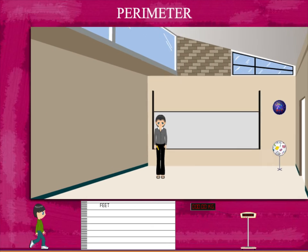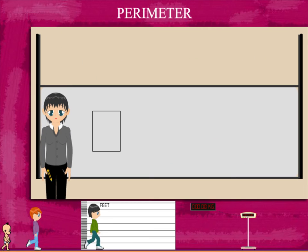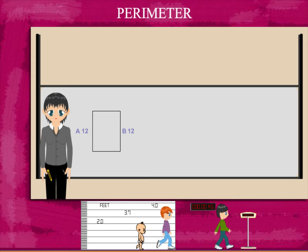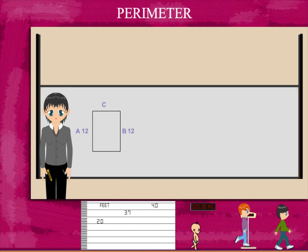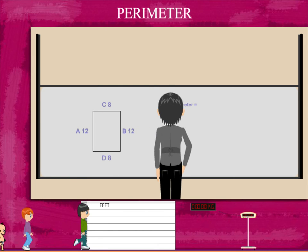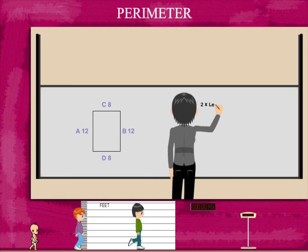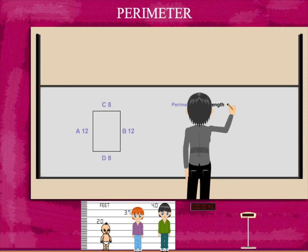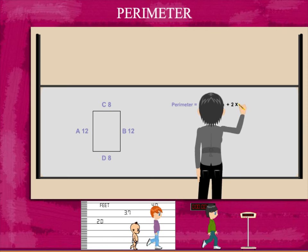Perimeter Teacher Nancy is showing a rectangle on the board with the measurements of its sides A and B as 12 units each, and sides C and D as 8 units each. Nancy Ma'am explains that the perimeter of this rectangle is 2 into length plus 2 into breadth.